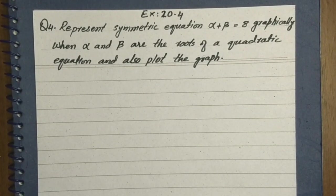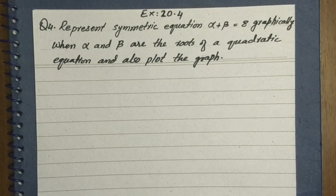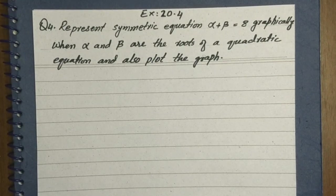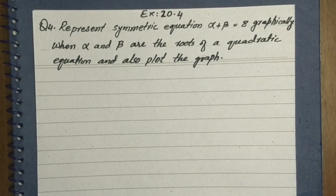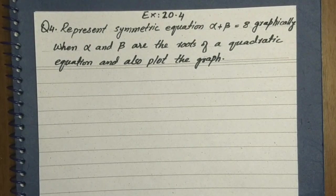Bismillahirrahmanirrahim. Exercise 20.4, question number 4: represent the symmetric equation alpha plus beta equals 8 graphically, when alpha and beta are the roots of the quadratic equation, and also plot the graph.